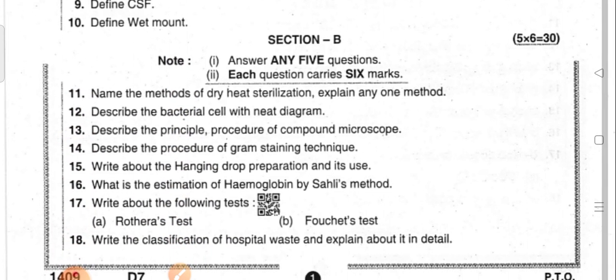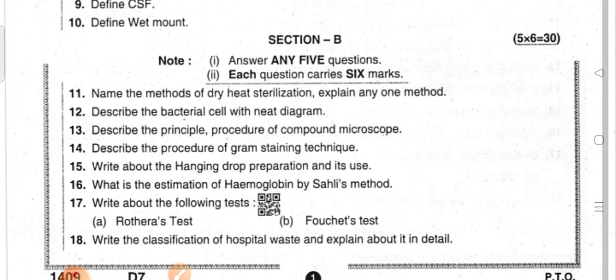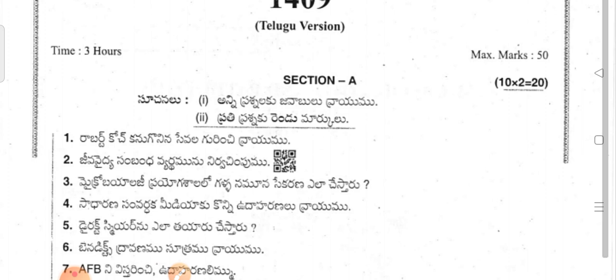Section B questions: Name the methods of dry heat sterilization and explain any one method. Describe the bacterial cell with a diagram. Explain the principle and procedure of the compound microscope. Describe the procedure of Gram staining technique. Write about the hanging drop preparation and its use. What is estimation of hemoglobin by Sahli's method? Write about the Coombs test and the author's test. Provide the classification of hospital waste and explain in important detail.